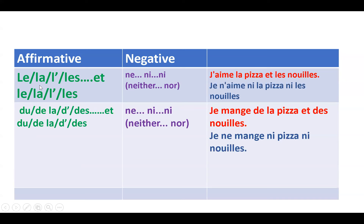Now for 'ni...ni' (neither...nor), when you have two options to negate: you use 'ne' + verb + 'ni...ni.' With definite articles (le, la, les), the articles remain unchanged. For example, 'j'aime la pizza et les nouilles' — I like pizza and noodles. Negation: 'je n'aime ni la pizza ni les nouilles' — I don't like neither the pizza nor the noodles. The definite article stays as it is.